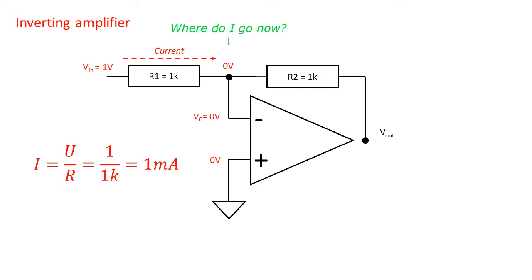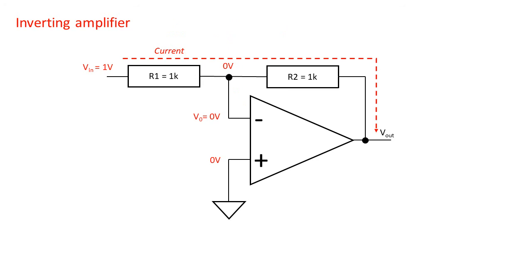But then it finds out that the virtual ground isn't a real ground so it has to go somewhere else. It sees the inverting input of the op amp but the input is high impedance. The current won't be able to enter. So all it can do is travel via the feedback resistor. It is important to notice that current flow once again can only happen from a higher to a lower voltage.